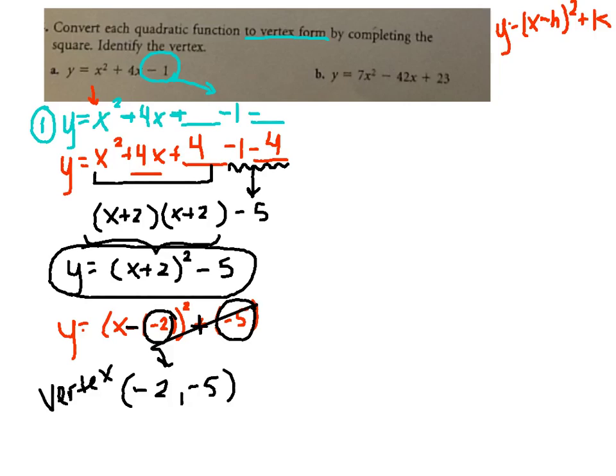Okay, for the second problem, do step 1 still. Always, when you're completing the square, do step 1, which is writing in your blanks. So y equals 7x squared minus 42x plus our blank. We're moving this 23 off to the side. And then minus whatever we added on to complete the square.